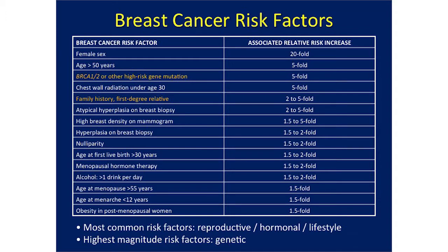We know a lot of the breast cancer risk factors. This table shows the associated relative risk increase by various risk factors. Top of the list is female sex and age greater than 50 years — that's the typical time when people tend to get breast cancer. As we go down the list, we see that having a high-risk inherited genetic mutation like BRCA1 or BRCA2 is a very strong risk factor associated with a fivefold increase, as is a family history with a first-degree relative — and sometimes that means there's a BRCA or other high-risk mutation in the family.